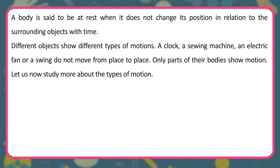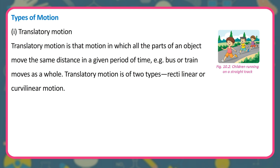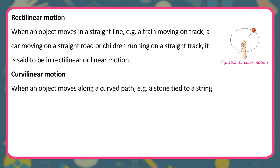A clock, a sewing machine, an electric fan or a swing do not move from place to place; only parts of their bodies show motion. Translatory motion is that motion in which all the parts of an object move the same distance in a given period of time, for example a bus or train moves as a whole. Translatory motion is of two types: rectilinear or curvilinear motion. When an object moves in a straight line, for example a train moving on track, a car moving on a straight road, or children running on a straight track, it is said to be in rectilinear or linear motion.